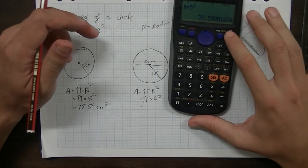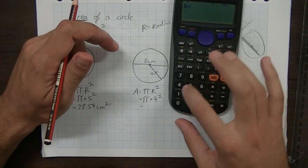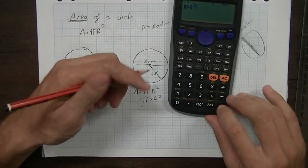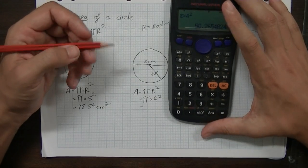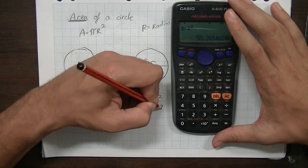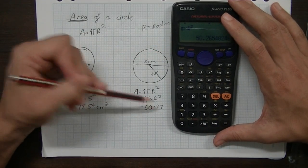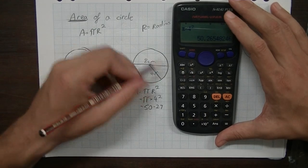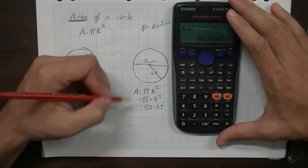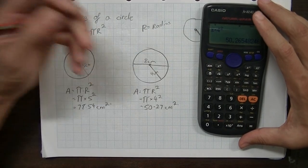So, pi times 4 squared. Find pi in your calculator. Times 4 squared. It should give you an answer of 50.27. Well, it's 50.265, but when you round it up, it's 50.27. Again, it's an area, so make sure you write your units in there. Centimetres squared, because it's an area.